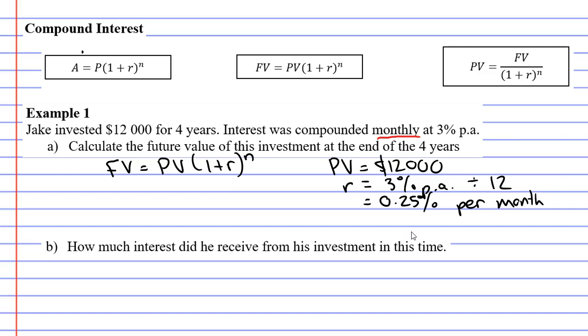Also, whenever you find your interest rate, you need to convert it to a decimal. So we need to take the 0.25%, divide it by 100, which gives us 0.0025.